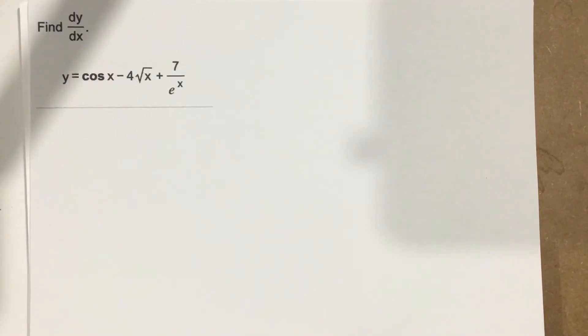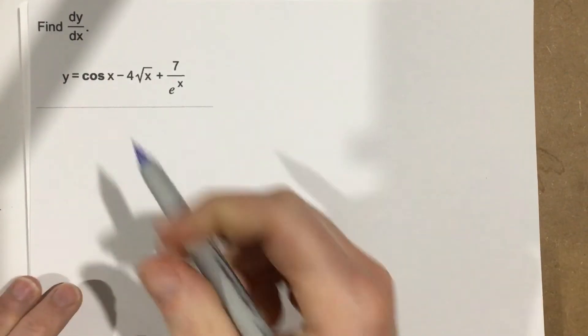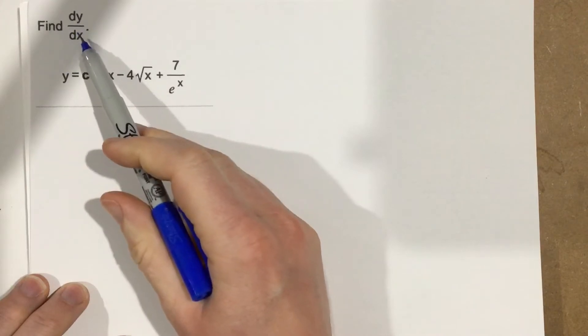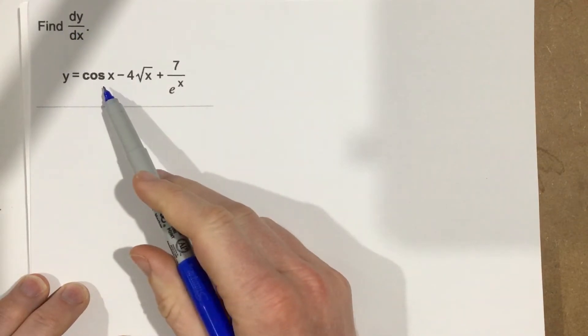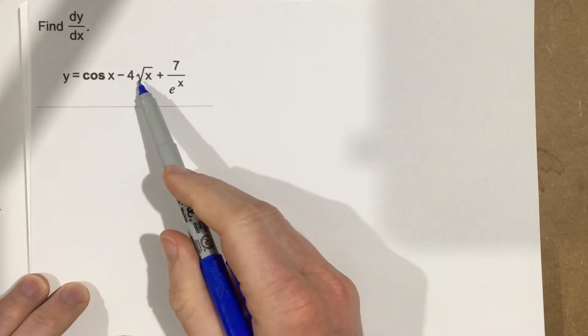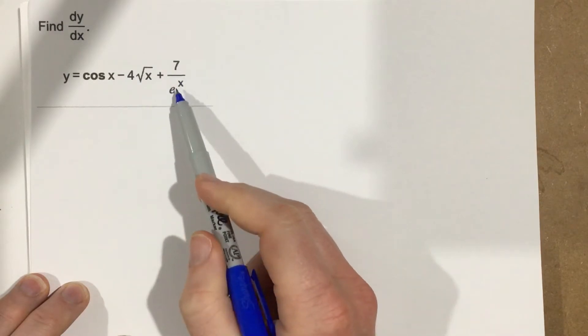This is problem number 3 from section 3.5, and this problem says find the derivative of y with respect to x for y equals cosine x minus 4 root x plus 7 over e to the x.